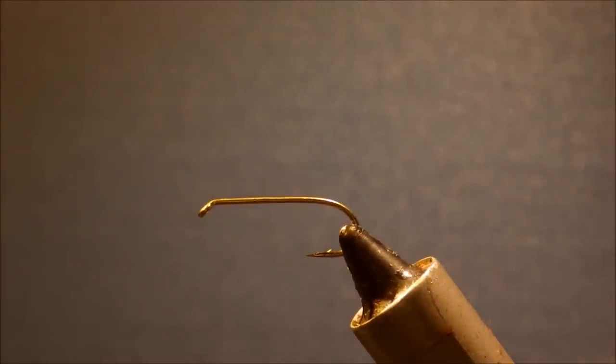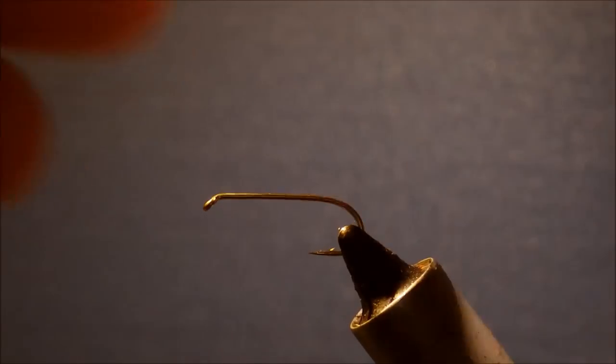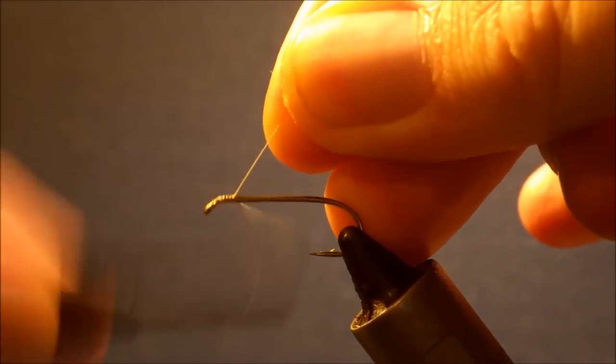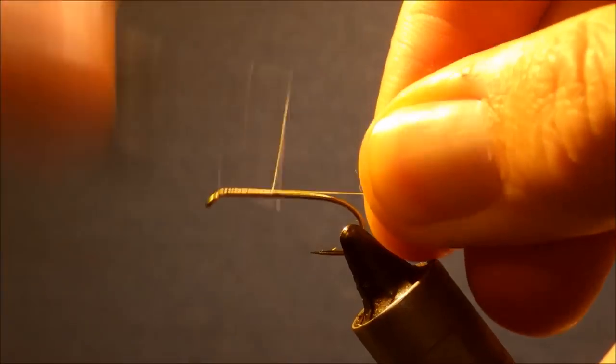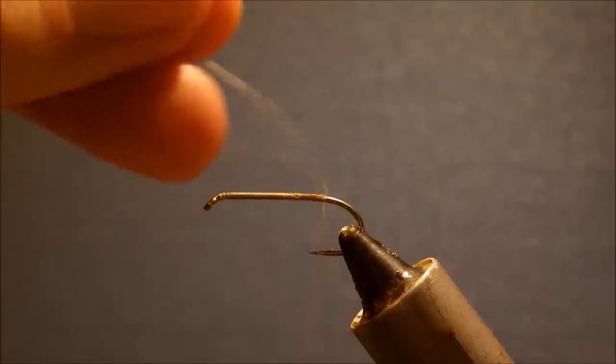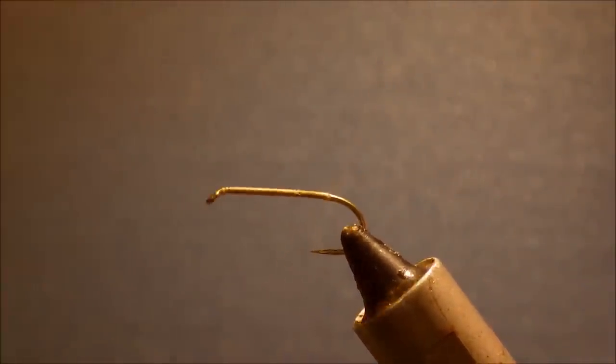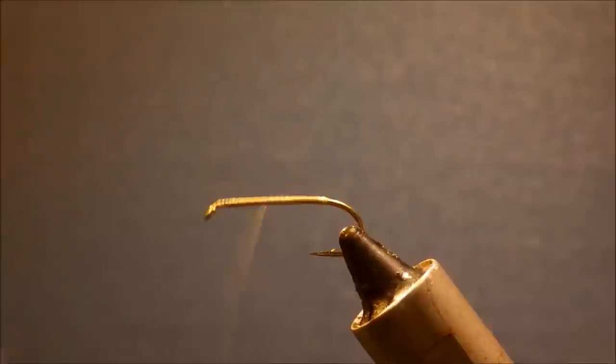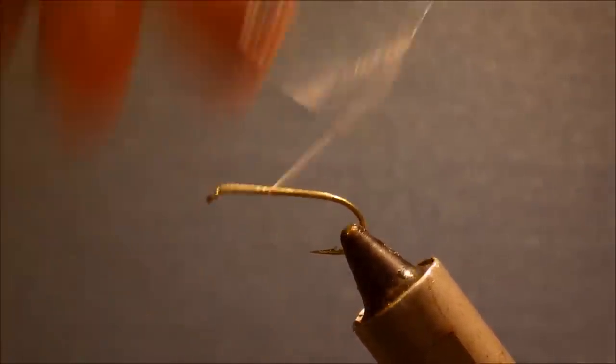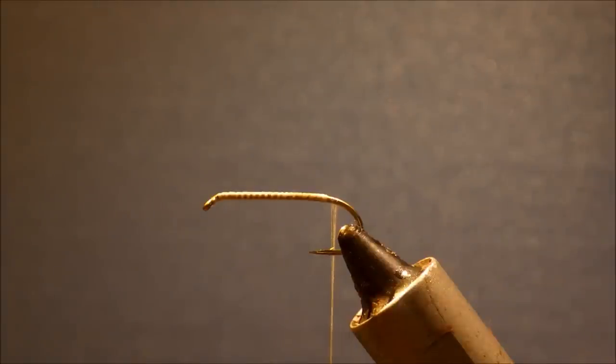So I'm starting a TMC 3761 size 8 in the vise. I'm going to run on a better tan thread. Obviously you can change it if you're tying them green or whatever, just change the thread color. It's Uni. I like a round thread rather than a flat thread for this. I think it's better for the foam, and I like to sort of like a decent wee base to help the super glue on the foam to stick for the body.